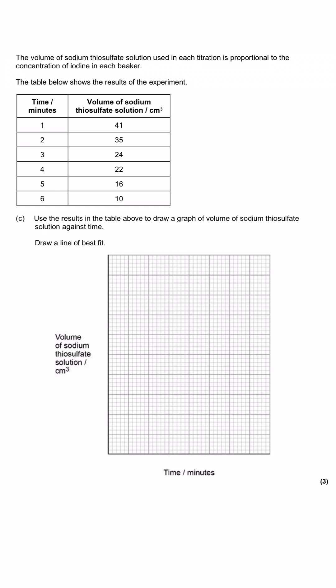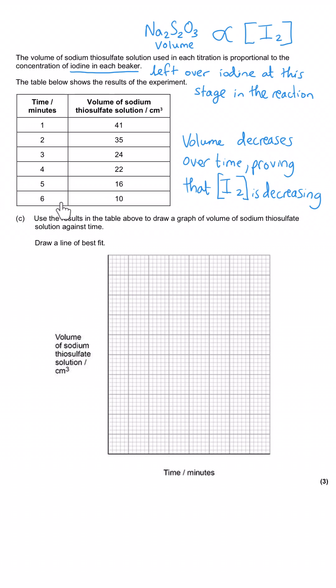The volume of sodium thiosulfate solution used in each titration is proportional to the concentration of iodine in the beaker—that is, the concentration of iodine left over at that stage in the reaction. The table shows the results with time passing and volume of sodium thiosulfate going down. In part C we've been asked to use these results to draw a graph of volume of sodium thiosulfate on the y-axis against time on the x-axis and draw a line of best fit.